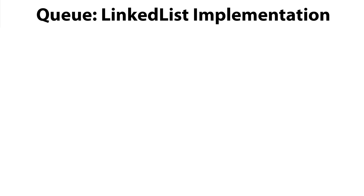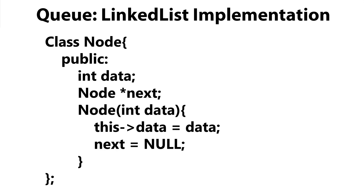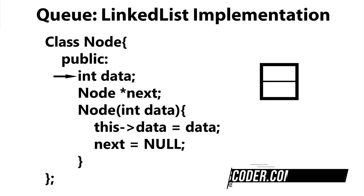To get started, we're going to create two classes. The first class is more of a helper class. We're going to create a class called node. And if you've worked with linked lists before, you know a node essentially has two main components. It has the data, and the data can be whatever you want. In our case, we're going to make it an int.